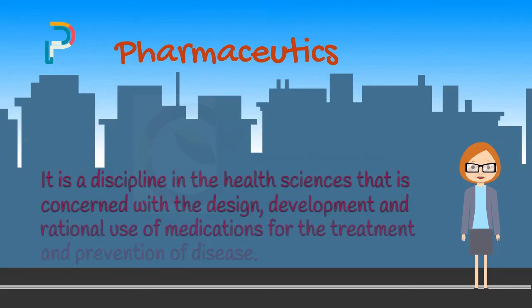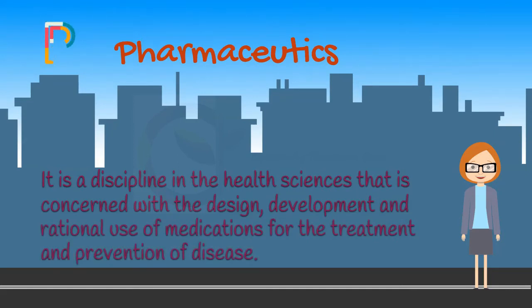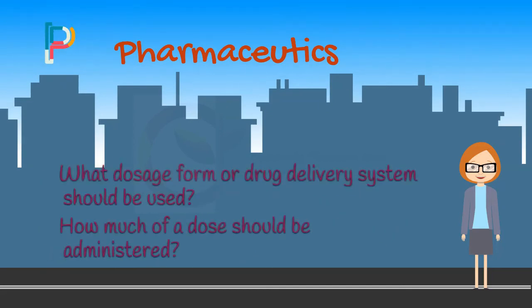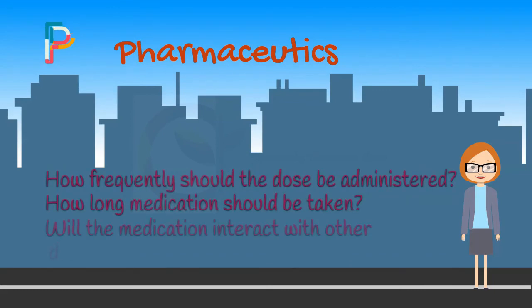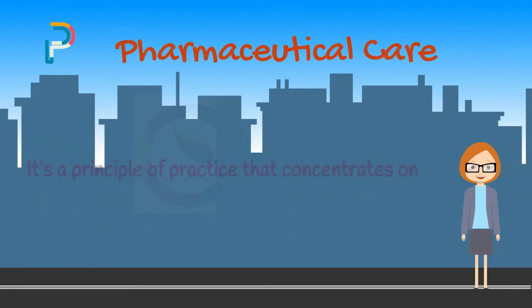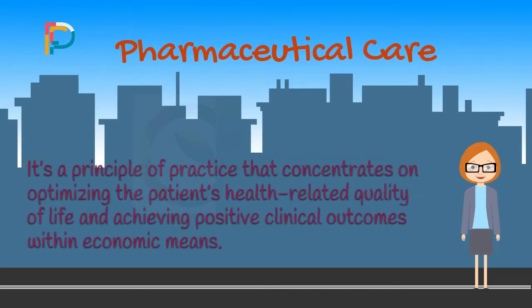Letter P. Pharmaceutics — it's a discipline in the health sciences that is concerned with the design, development, and rational use of medications for the treatment and prevention of disease. For example, pharmaceutical sciences seek to provide answers to: What dosage form or drug delivery system should be used? How much of a dose should be administered? How frequently should the dose be administered? How long should medication be taken? Will the medication interact with other drugs? Pharmaceutical care — it's a principle of practice that concentrates on optimizing the patient's health-related quality of life and achieving positive clinical outcomes within economic means.